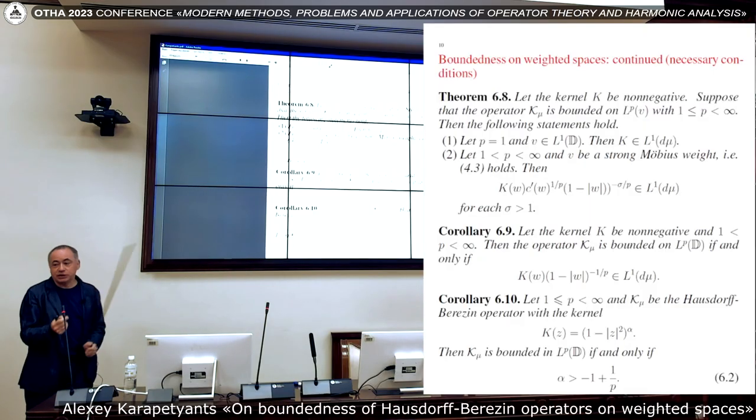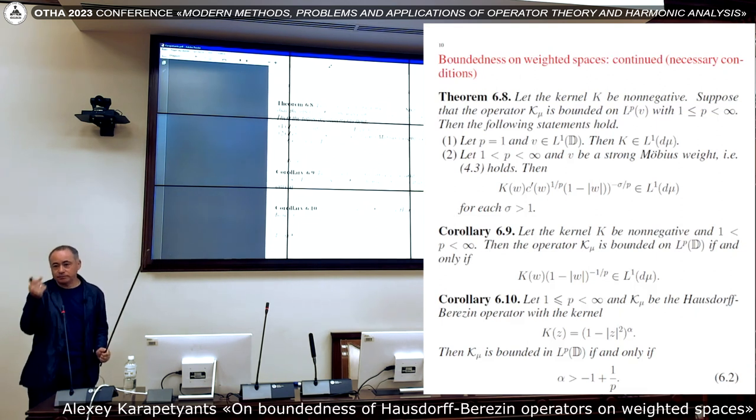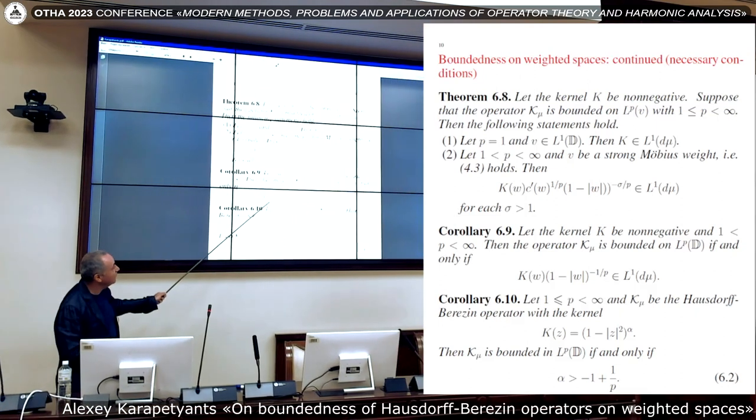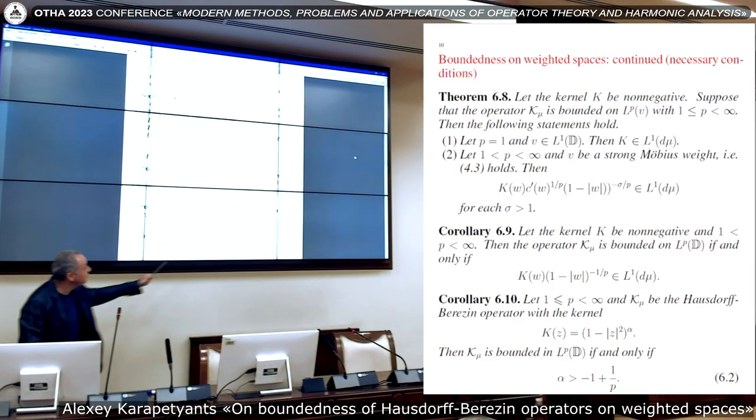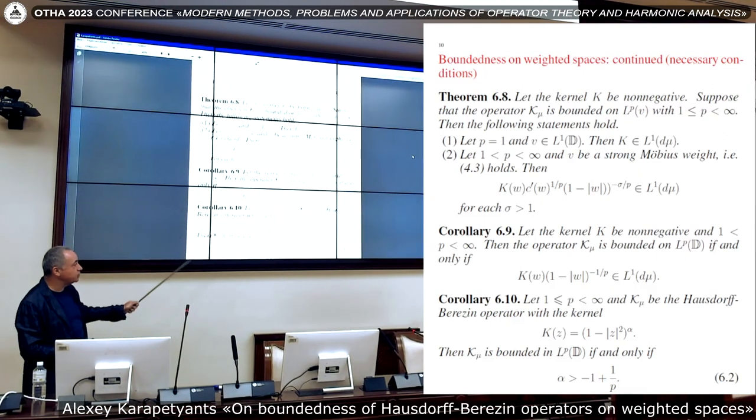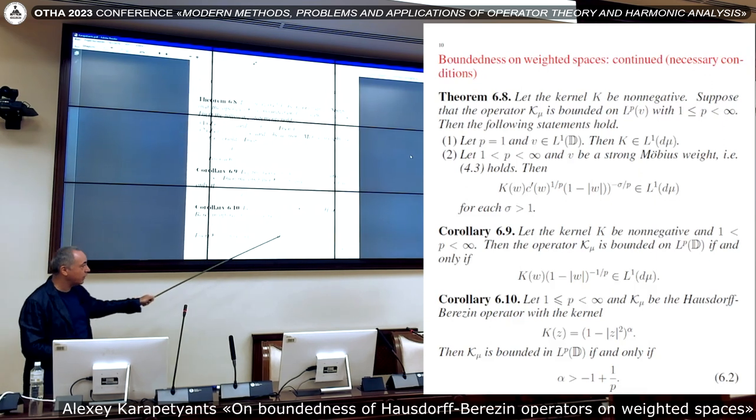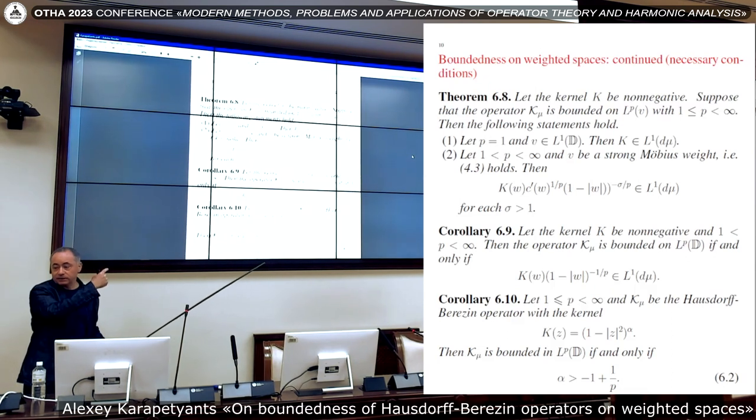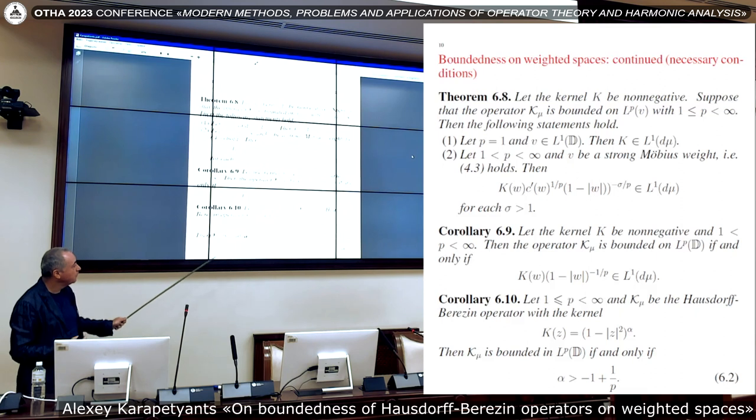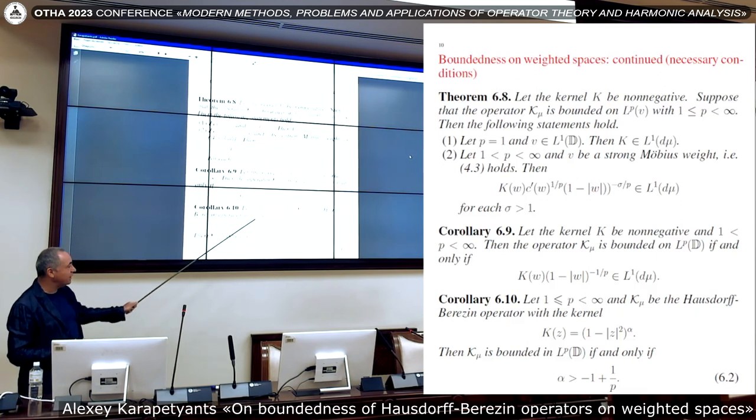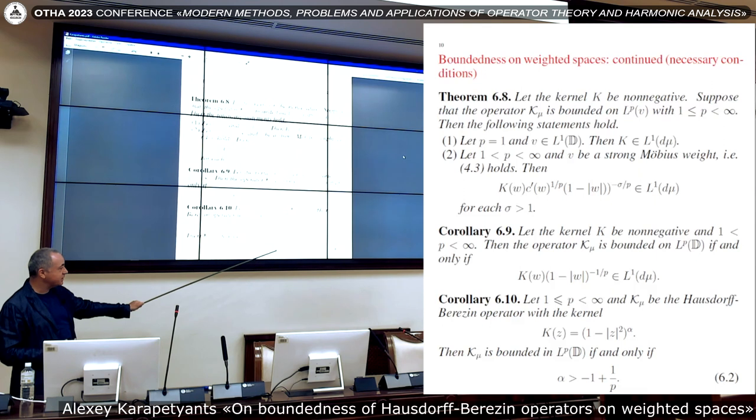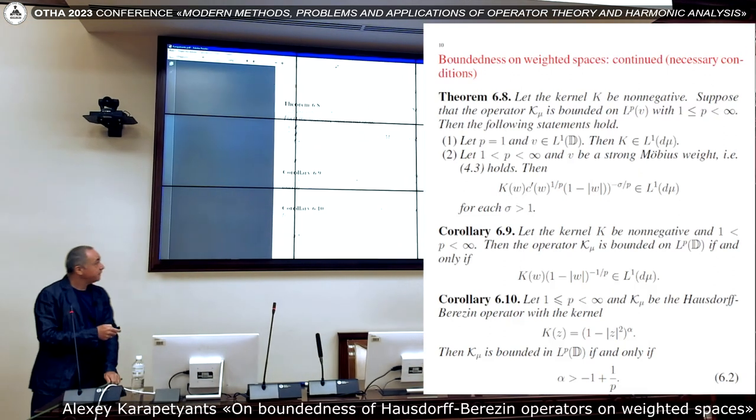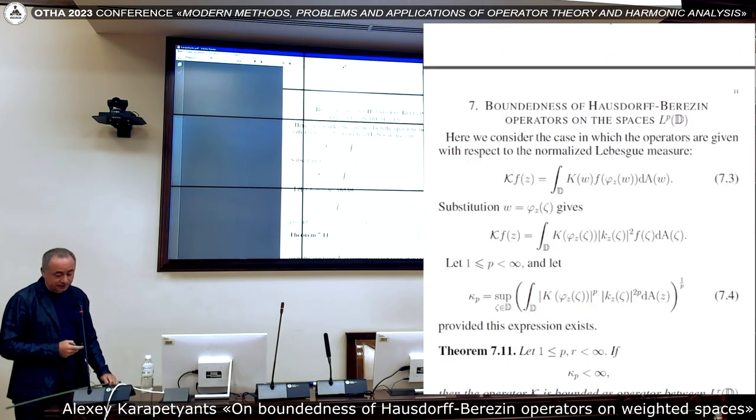Again, if you consider specific cases, then you can just give criteria. Like in this case, we have a criteria, you see, bounded if and only if. And I also want to mention the particular case when you have power type kernel. I repeat, the Berezin transform exactly obtained by taking power α equals to 2. In this case, we can formulate this condition in terms of alpha. Please remember this formula. I will refer to this formula later.